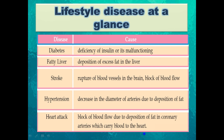Let's see the lifestyle diseases at a glance. Diabetes is mainly due to deficiency of insulin or its malfunctioning. Fatty liver is due to deposition of excess fat in the liver. Stroke results from rupture of blood vessels in the brain or blockage of blood flow. Hypertension or high blood pressure is due to a decrease in the diameter of arteries caused by fat deposition. Heart attack is a blockage of blood flow due to deposition of fat in the coronary artery, the artery closer to the heart which carries blood to it.